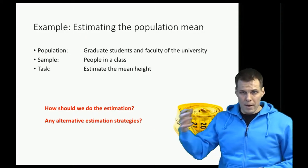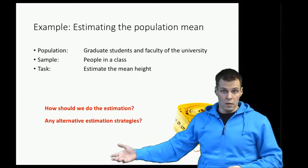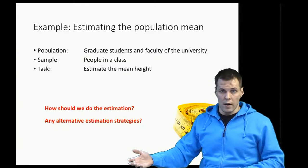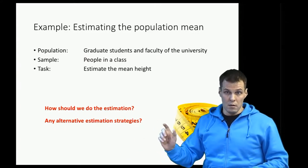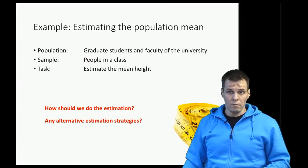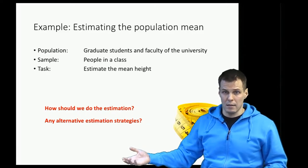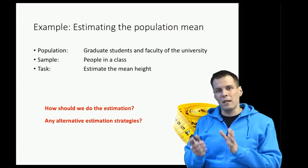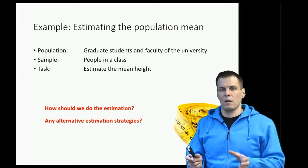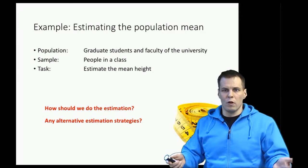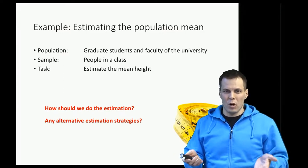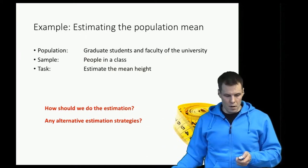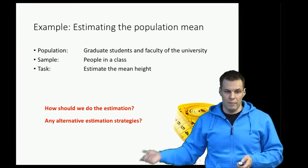Every time we say something is the best, we need some criteria. The best ice hockey team is the one that won the most matches; the best runner is the one with the smallest time; the best student has the highest GPA. So when deciding which estimator is the best, we have to define criteria and discuss the different properties that estimation strategies can have.